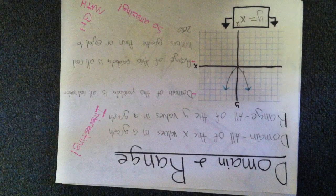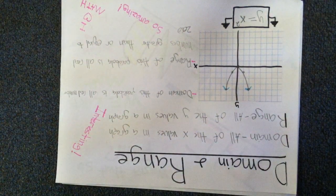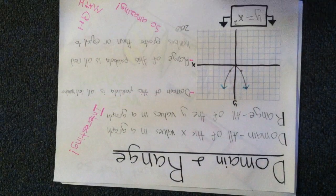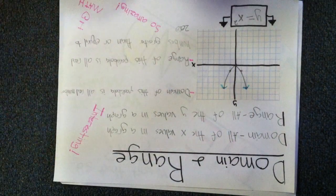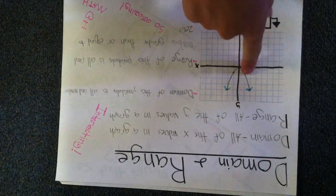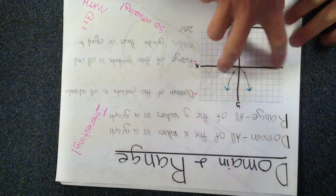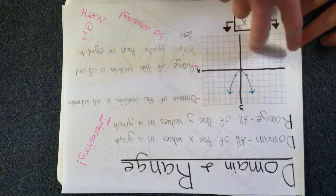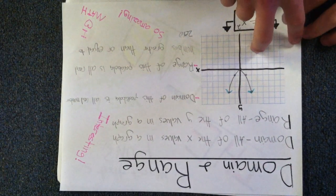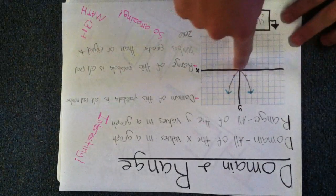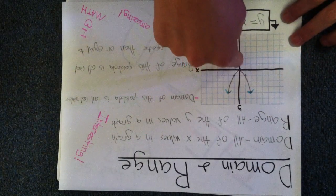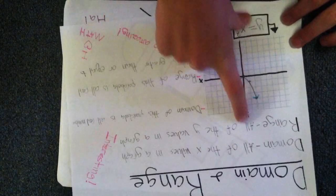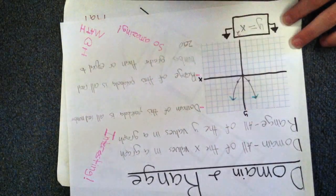Domain and range. Domain is all the x values in a graph, and range is all the y values in a graph. Domain of this parabola is all real numbers because the parabola goes on for infinity. The range of this parabola is all real numbers greater than or equal to 0. That's because the parabola intersects at 0 on the y intercept and it is not going down.